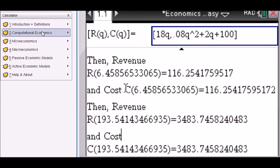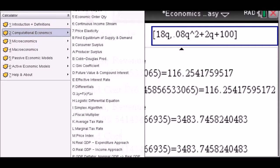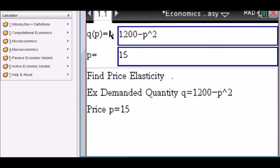Next. What else do we have? Demand Analysis, Economic Order Quantity, Continuous Income Stream, Price Elasticity.